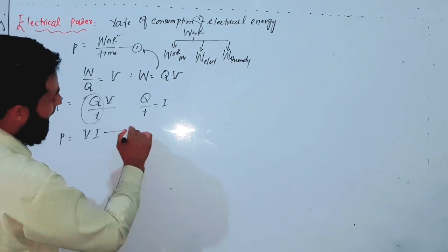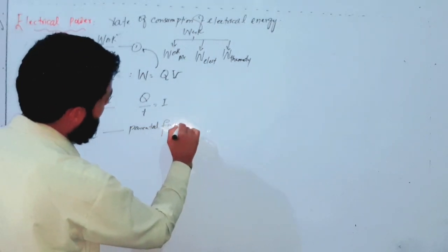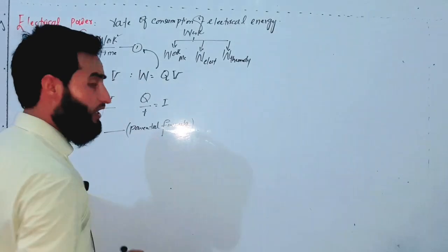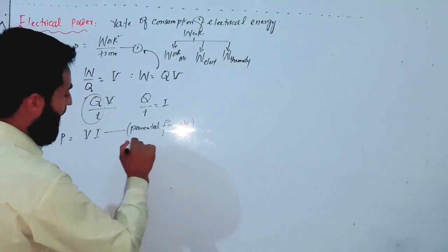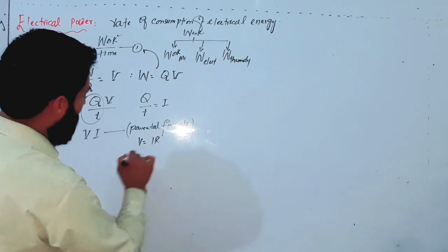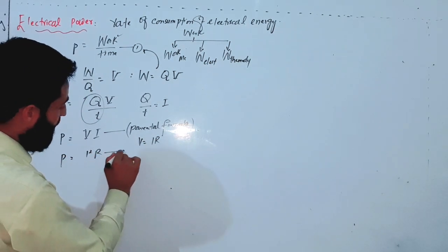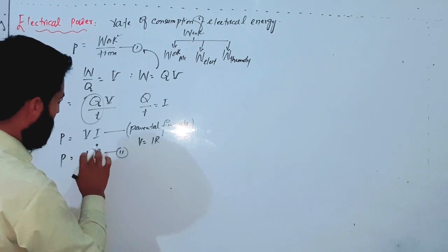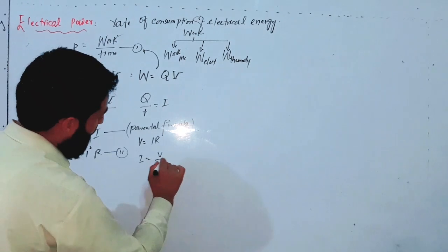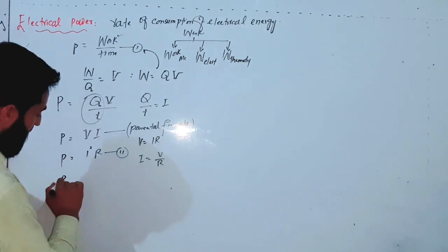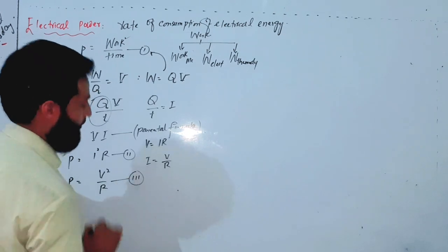This formula P = VI is called the parent formula, meaning it can be used for each and every type of circuit. If we substitute V = IR, we get P = I²R — this is the second equation. If we substitute I = V/R, we get P = V²/R — this is the third equation.